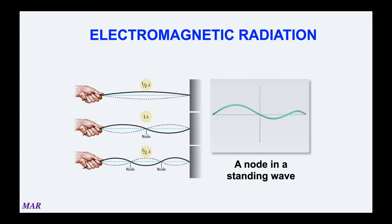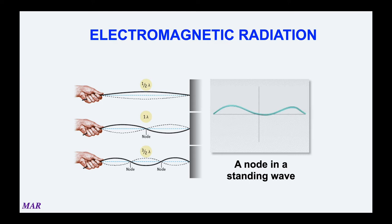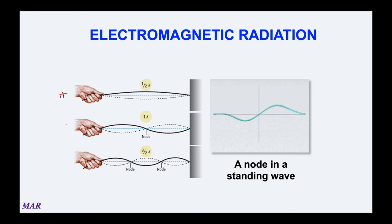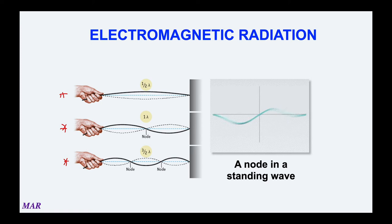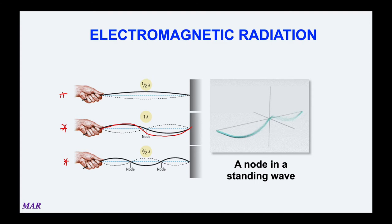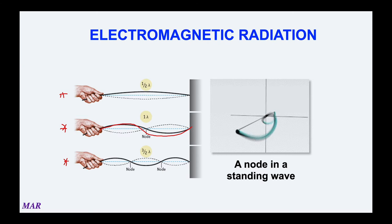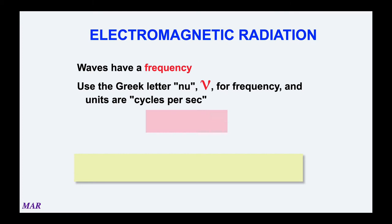Waves have a frequency, and frequency usually gets the symbol nu — it looks like a little v. Frequency is technically the waves that go by per unit time; almost everyone uses cycles per second or waves per second. All radiation has a relationship: wavelength times frequency equals c, the speed of light. The speed of light is 2.998 × 10⁸ meters per second — if the speed of light is constant, then if wavelength goes up, frequency has to go down, and vice versa.